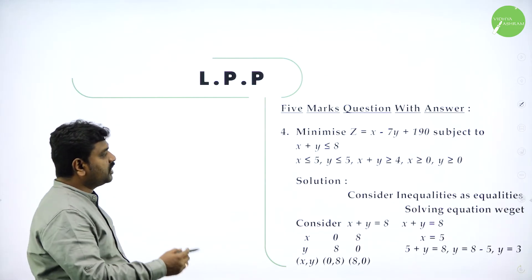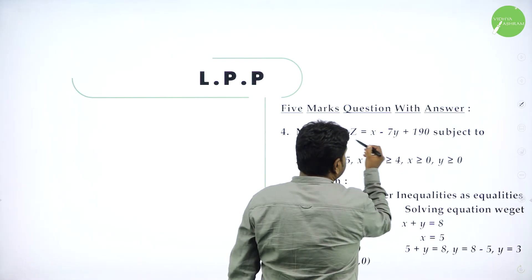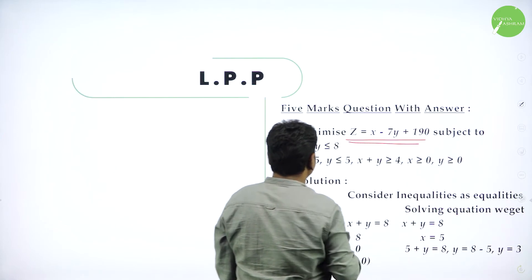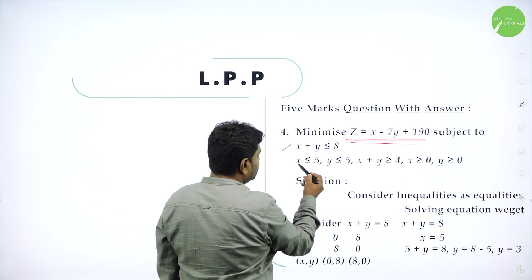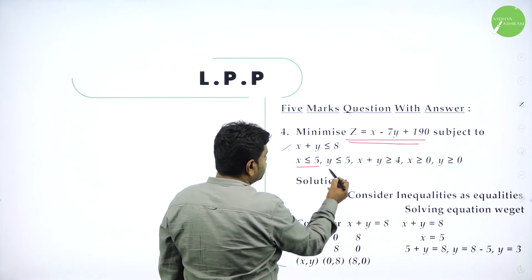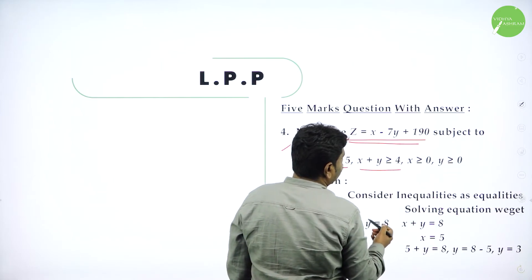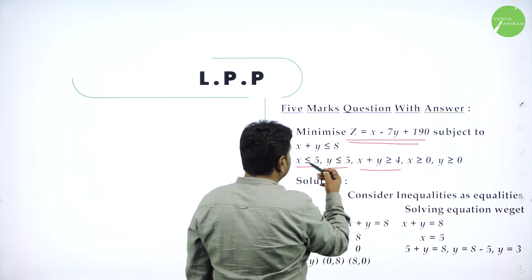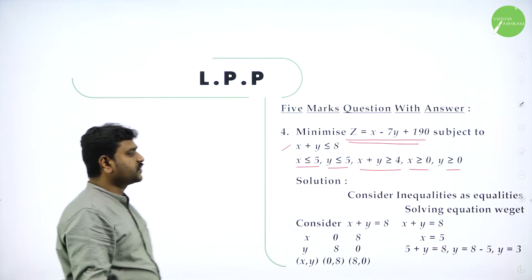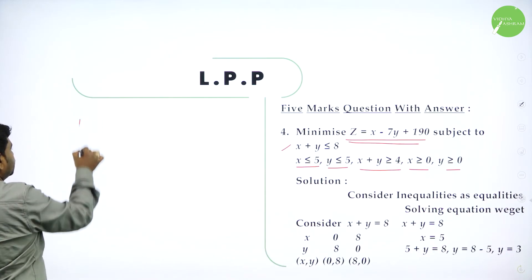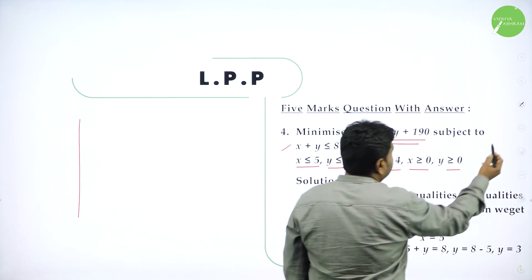Next question: minimize Z equal to X minus 7Y plus 190. This is the objective function. Conditions: first, X plus Y less than or equal to 8; second, X less than or equal to 5; third, Y less than or equal to 5; fourth, X plus Y greater than or equal to 4. And X greater than 0, Y greater than 0 means first quadrant. So we will draw the graph.